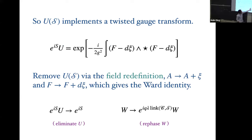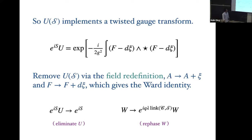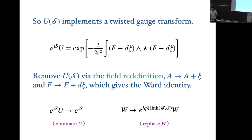Inserting U into the path integral is precisely the same as doing this winding transformation — it's instructions for shifting A by this amount. In doing so, you send W to this phase times W. The upshot is that the symmetry operator is topological and has a physics interpretation as actual physical stuff if you want to think about things microscopically.